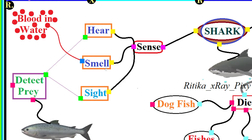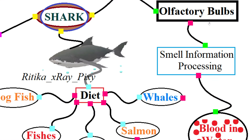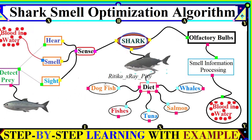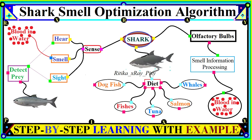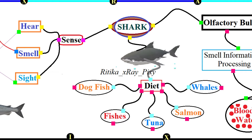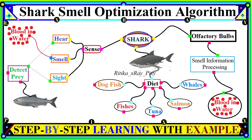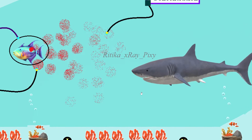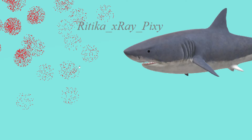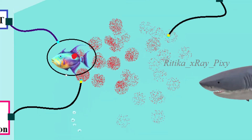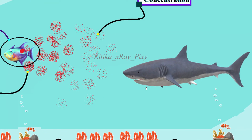Sharks can even smell blood in the water due to their keen sense of smell. They have large olfactory bulbs located in their forebrain, connected to their brain, which receive neural input about odors detected by cells. While the shark swims, water flows through their nostrils and enters the olfactory pits. They can detect even a single drop of blood in the water. Once a target is detected, the shark stalks the target before the kill.